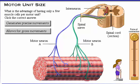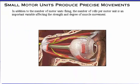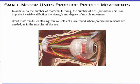What is the advantage of having only a few muscle cells per motor unit? Click the correct answer. In addition to the number of motor units firing, the number of cells per motor unit is an important variable affecting the strength and degree of muscle movement. Small motor units containing few muscle cells are found where precise movements are needed, as in the muscles of the eye.